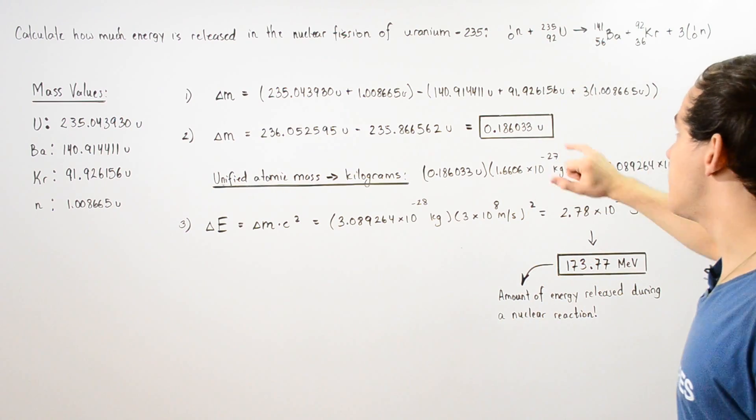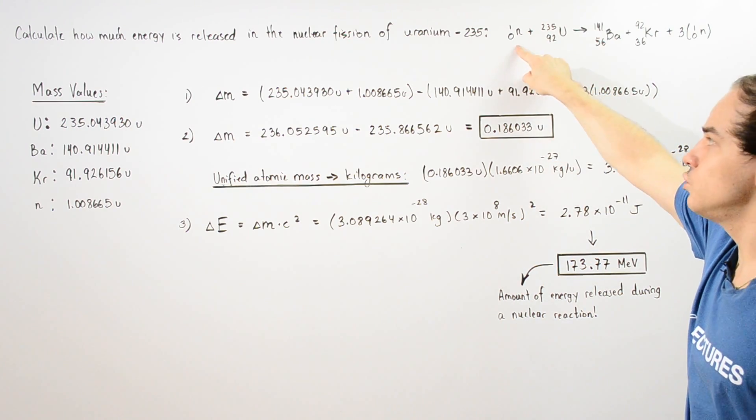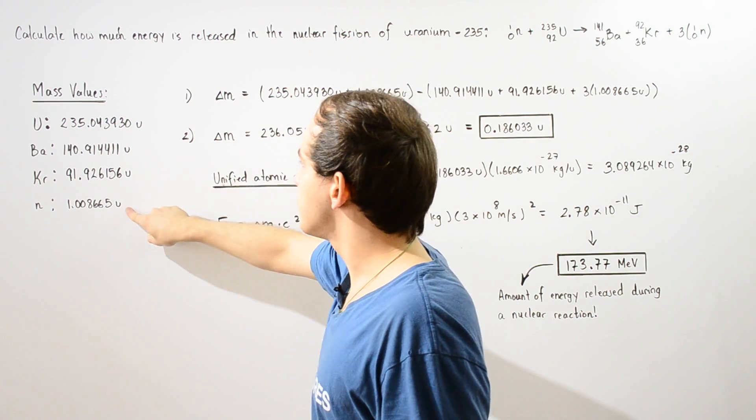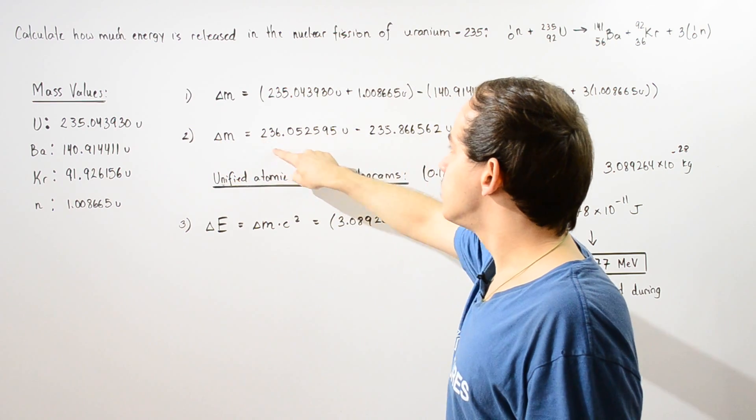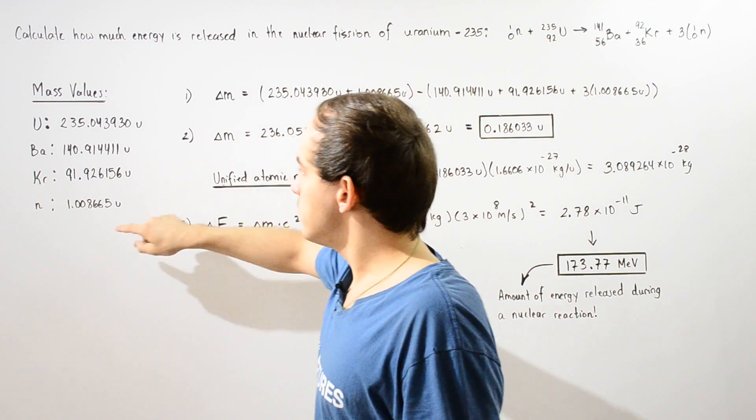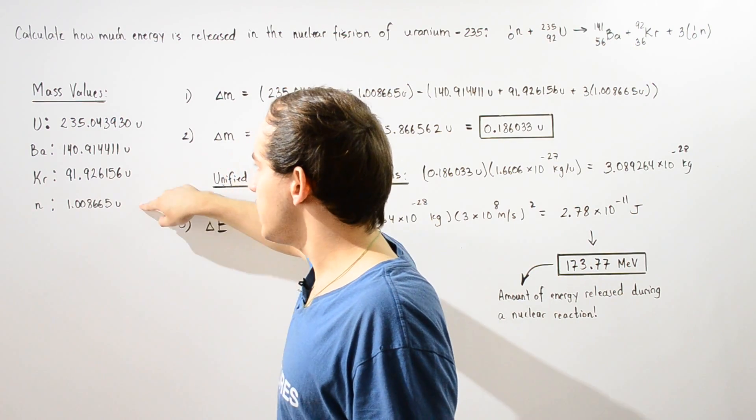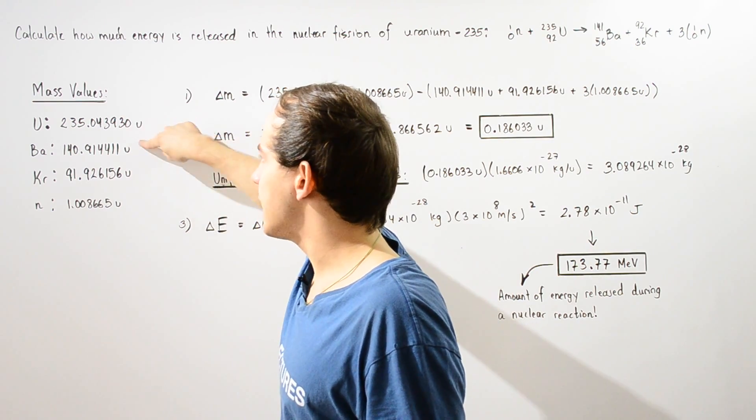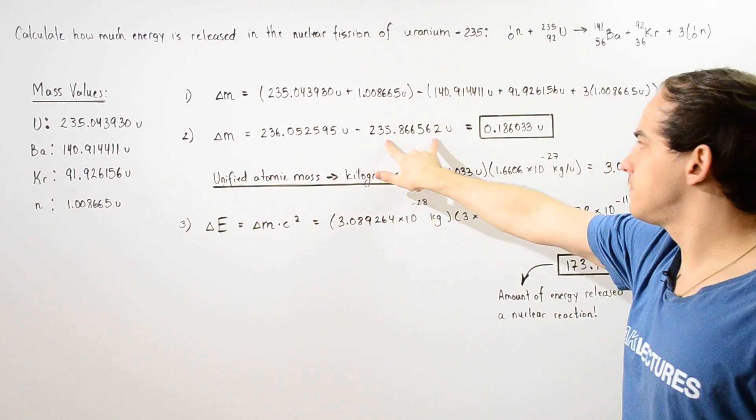So first, we take the sum of the masses of uranium and the neutron. So we take the mass of this and this, and we get this quantity. And then we take the sum of three neutrons, the krypton and the barium. So we multiply this by three and sum that with krypton and barium, and we get the following result.